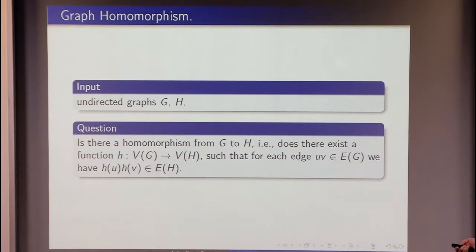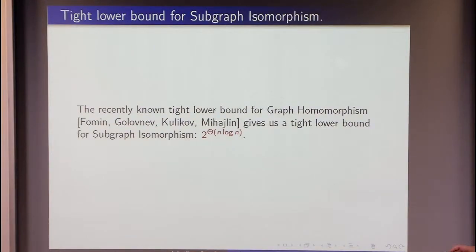If it is a reduction, then we can translate using this reduction results, the recent results for graph homomorphism, the recent lower bounds for graph homomorphism to lower bounds for subgraph isomorphism. And in such a way, using a tight lower bound for graph homomorphism, we can apply this reduction and obtain a tight lower bound for subgraph isomorphism.